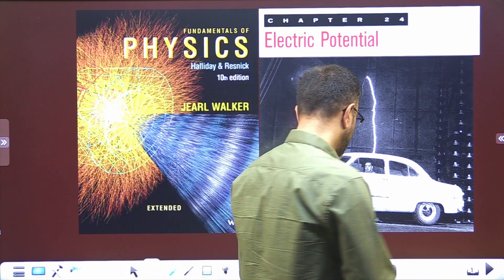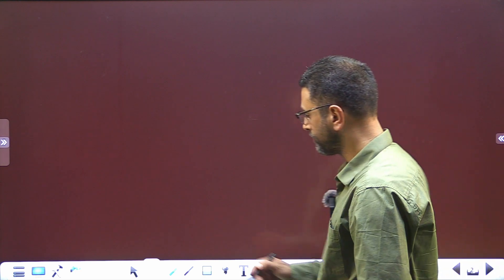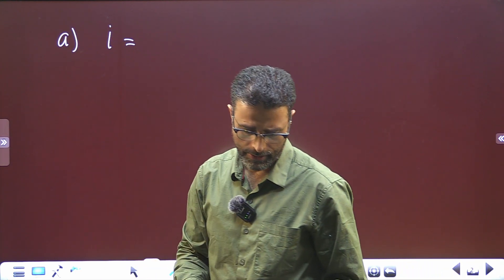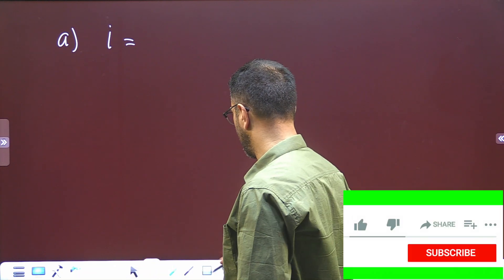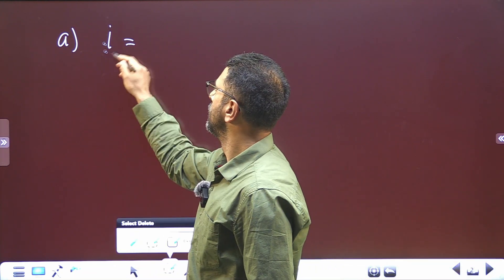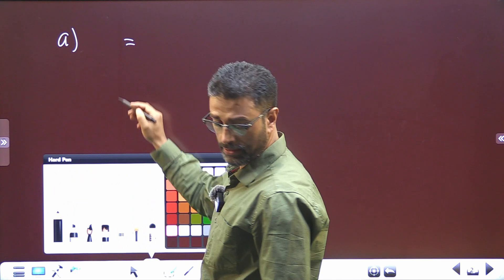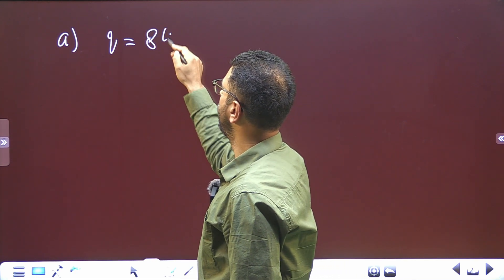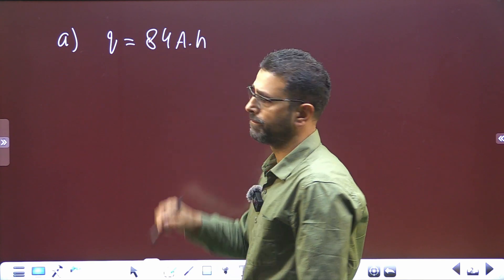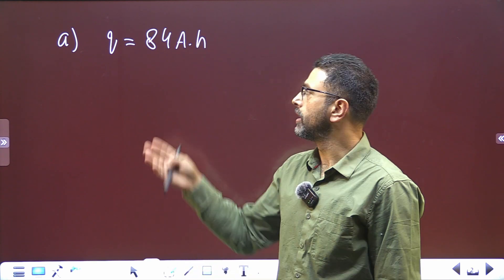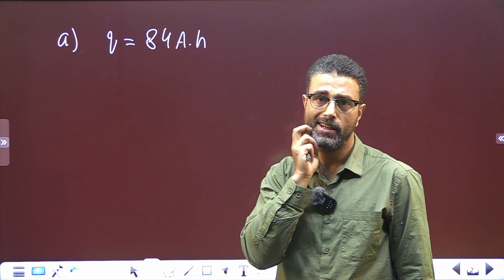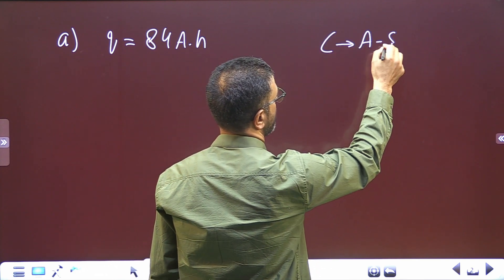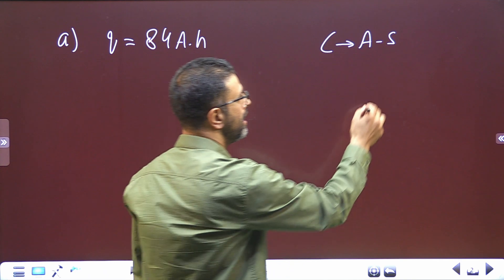So in the first case, we are given that the charge flowing is 84 ampere-hours. All we have to do is convert its units to coulombs. If you remember, coulomb is ampere-second. Remember, current is equal to charge per unit time.